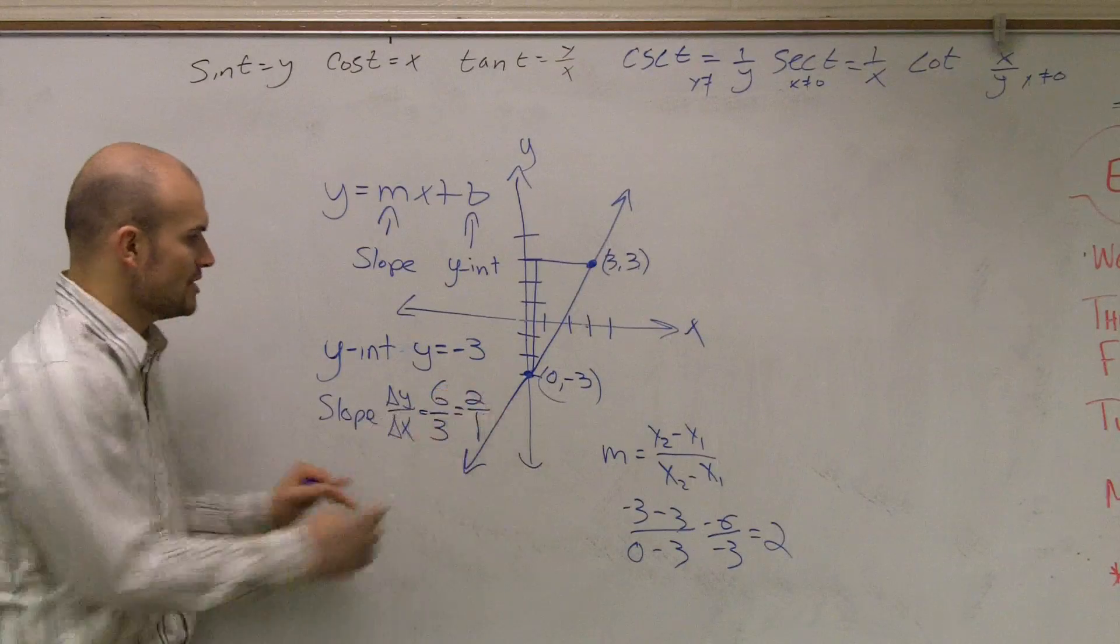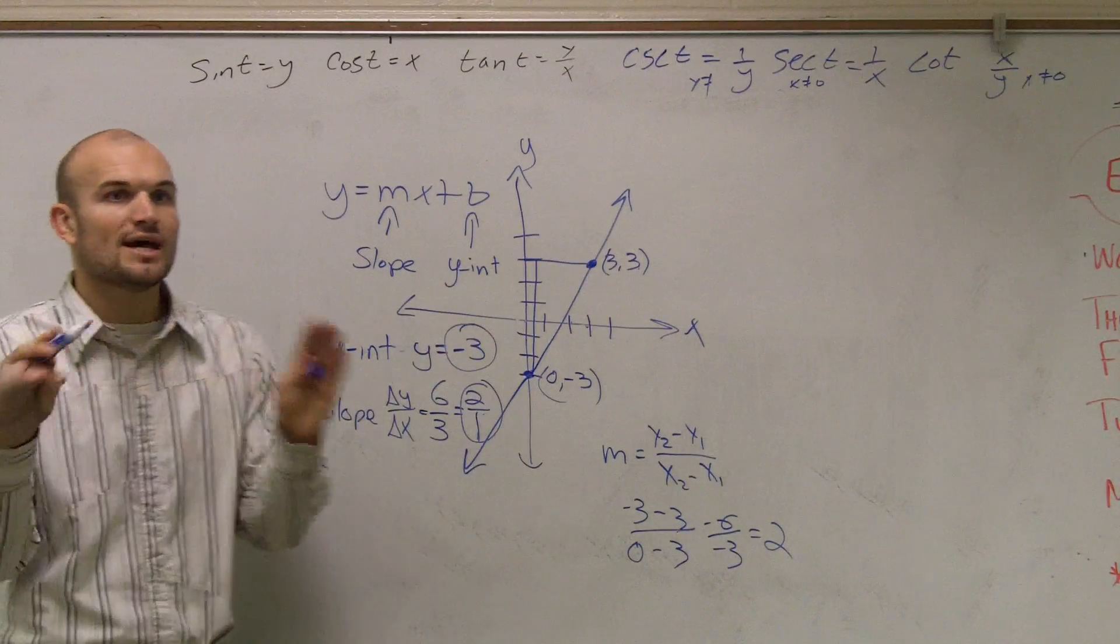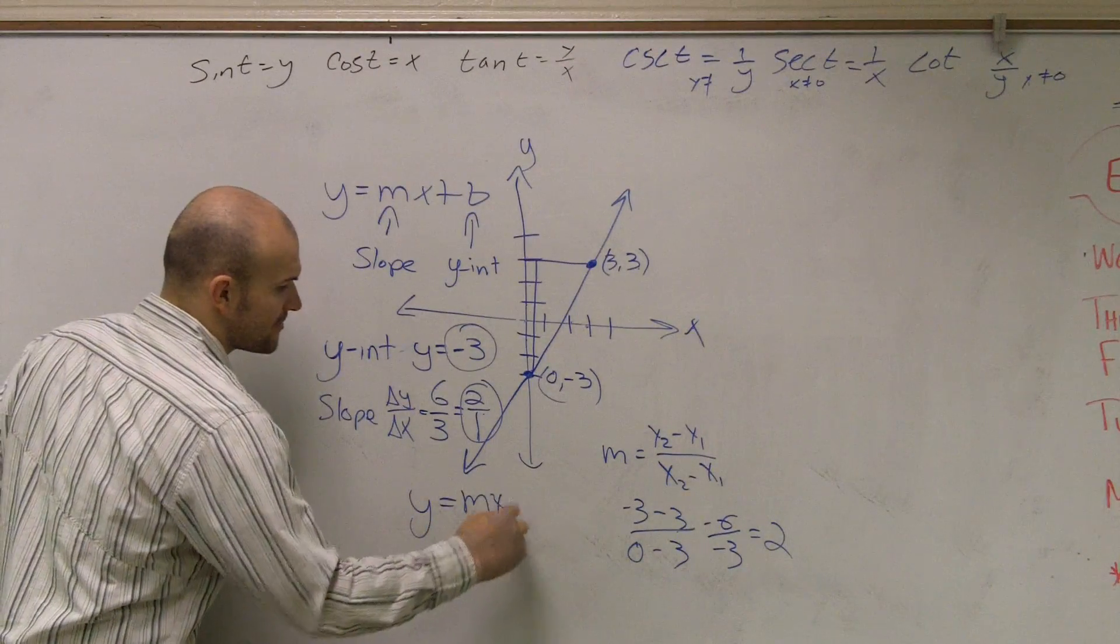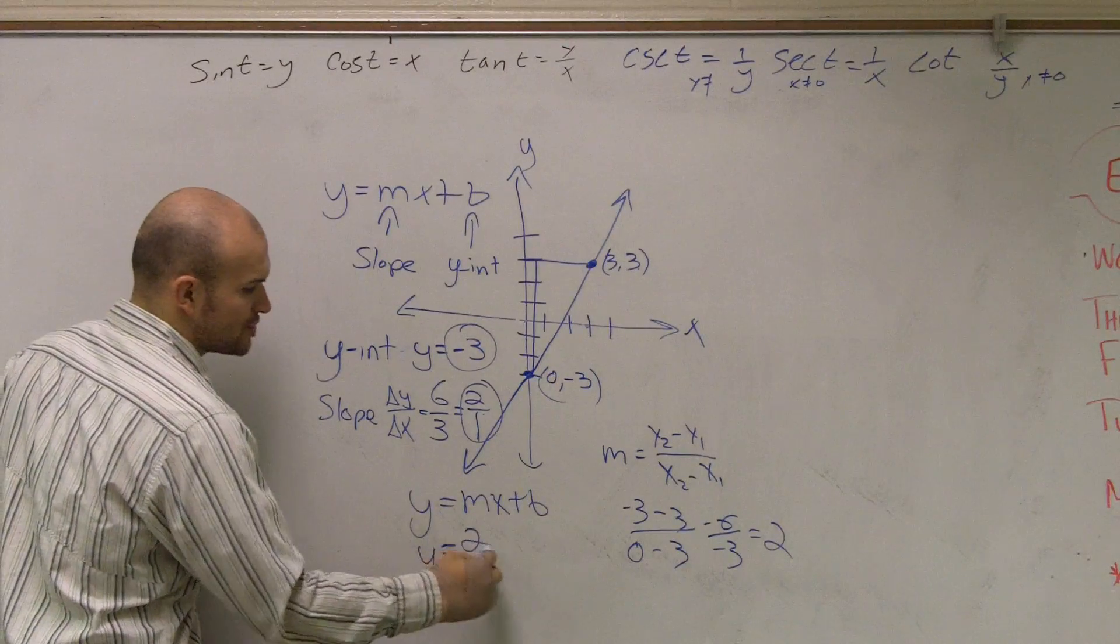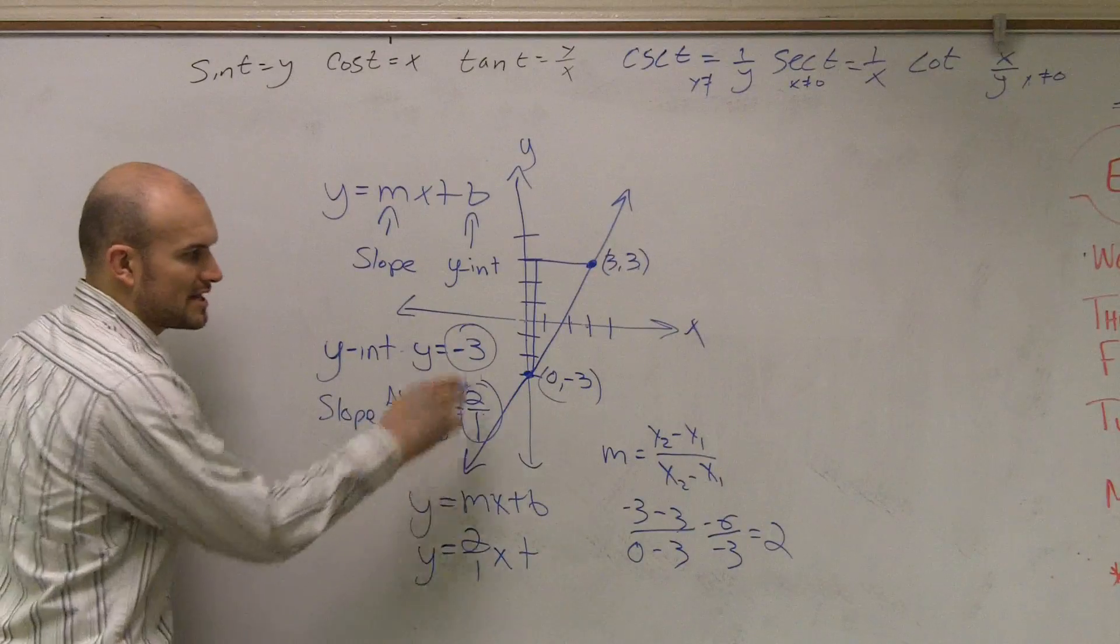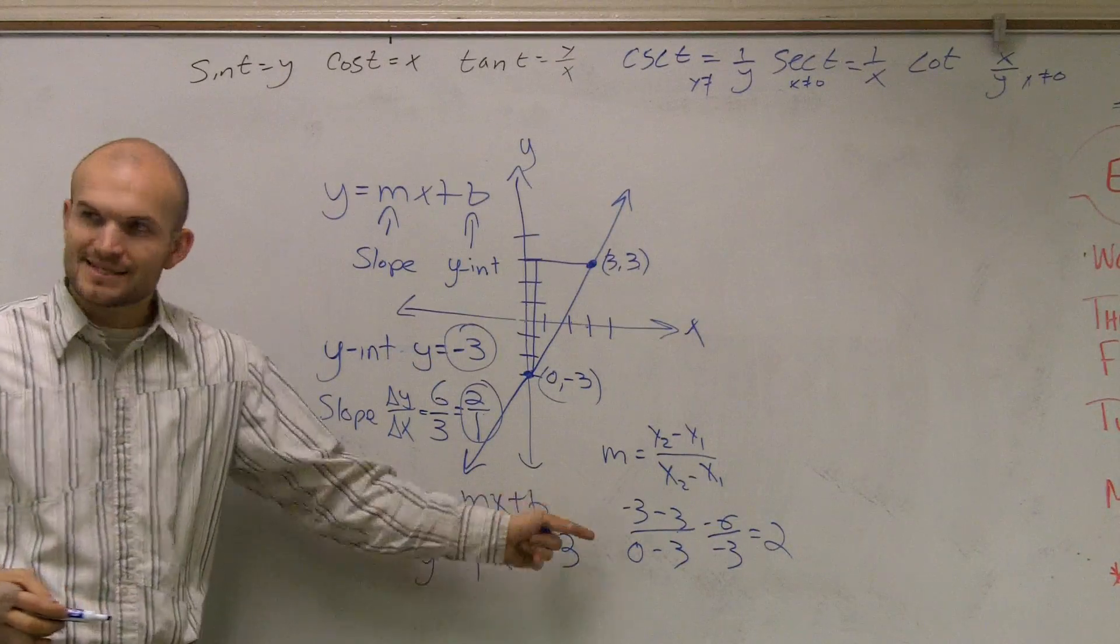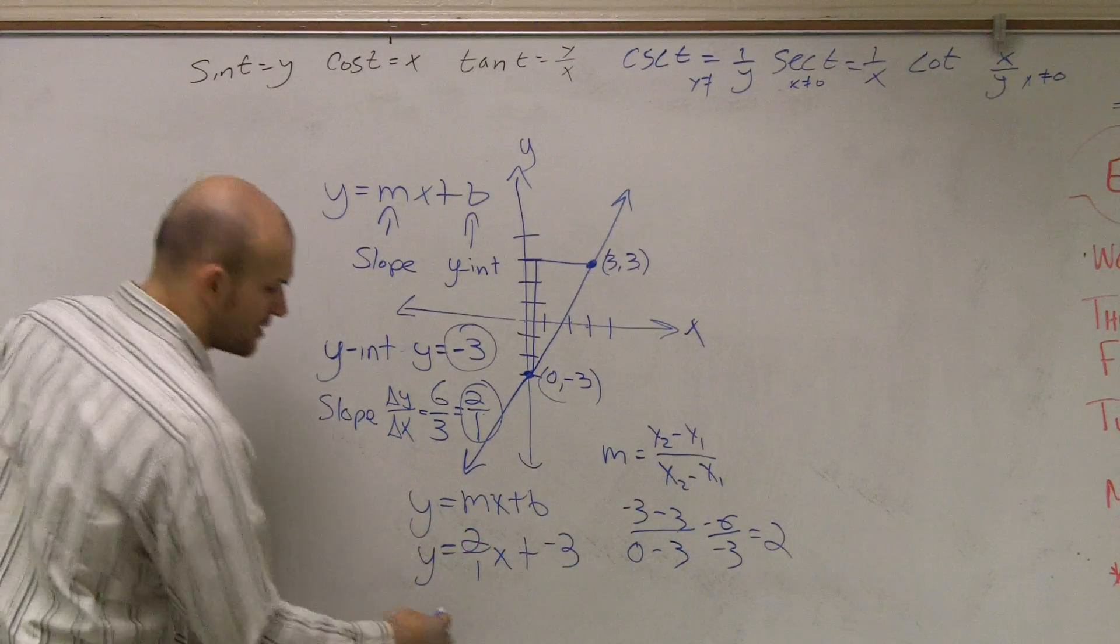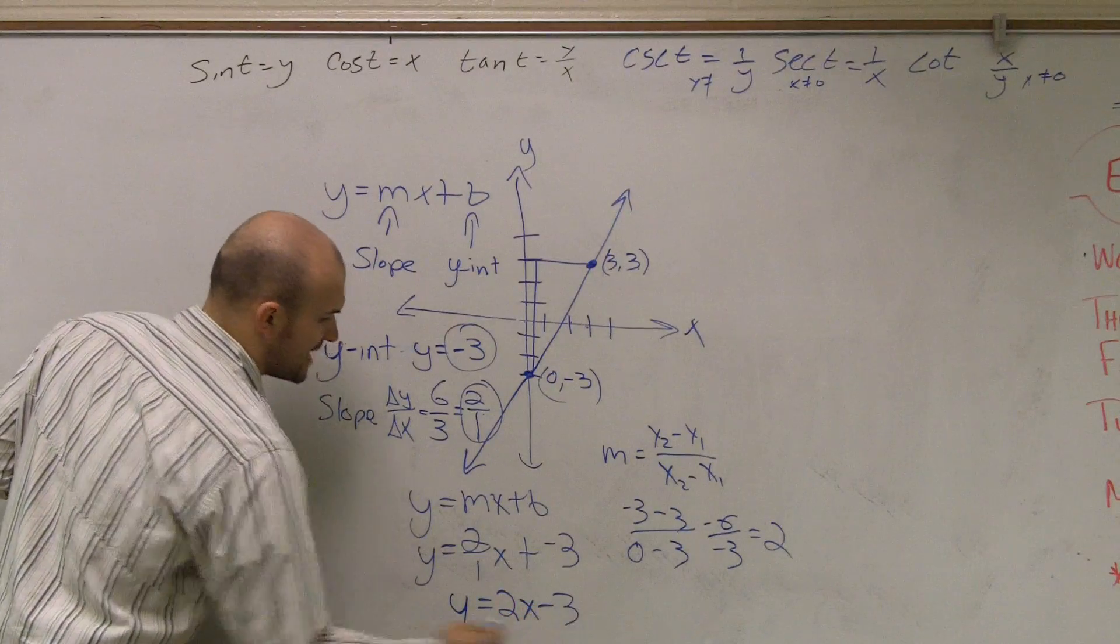Either way, once I know what my slope is and I know what my y-intercept is, all I do now is I plug them into the formula y equals mx plus b. And instead of writing m, I'm going to write my new slope, which is 2 over 1 times x plus what is my new y-intercept? Negative 3. Then, I don't really like writing plus and negative 3 or if I can reduce my fraction to a whole number, I will. So my final answer is y equals 2x minus 3.